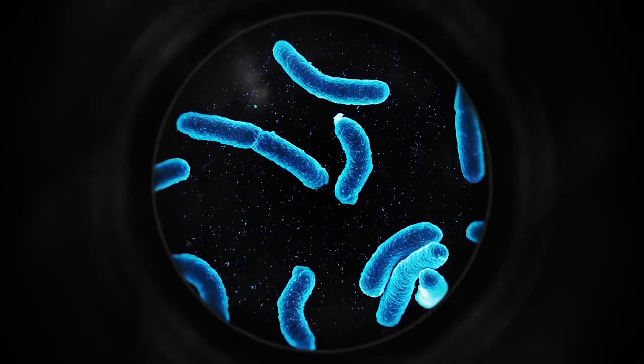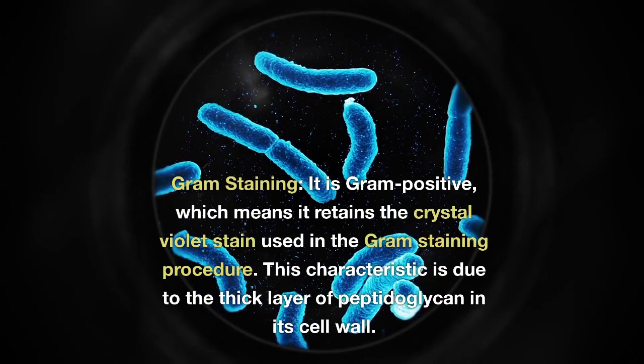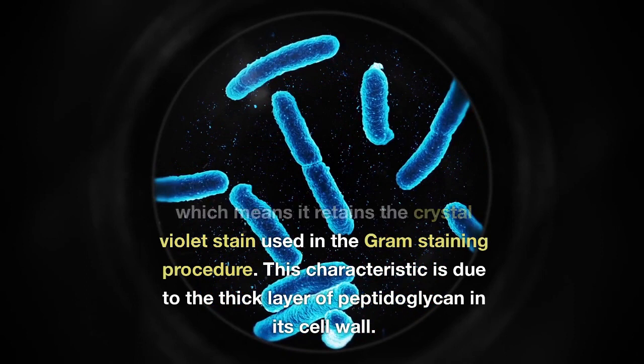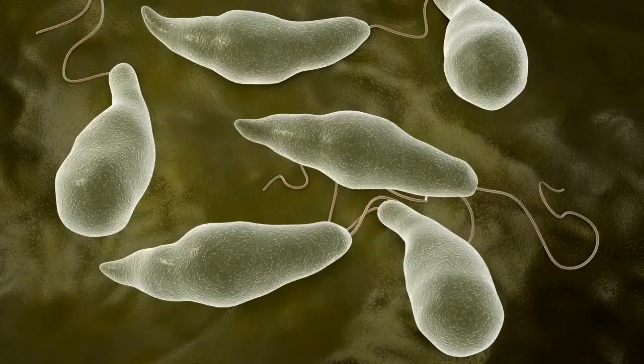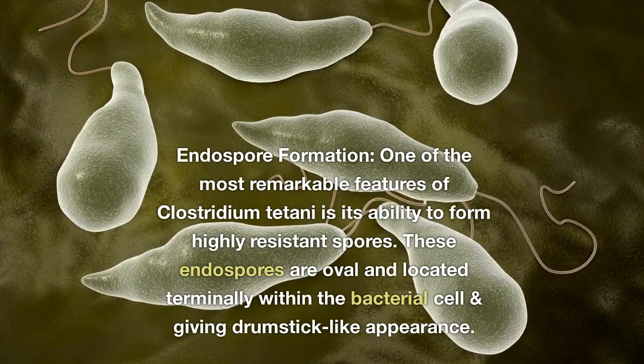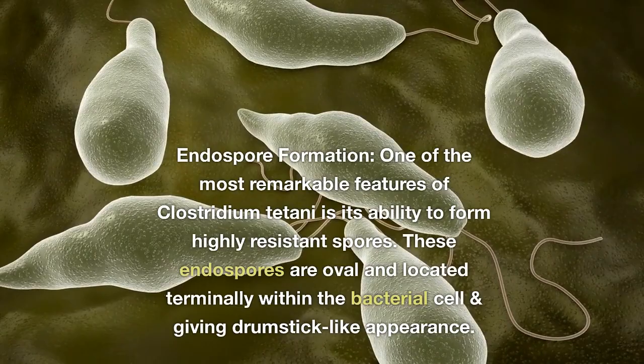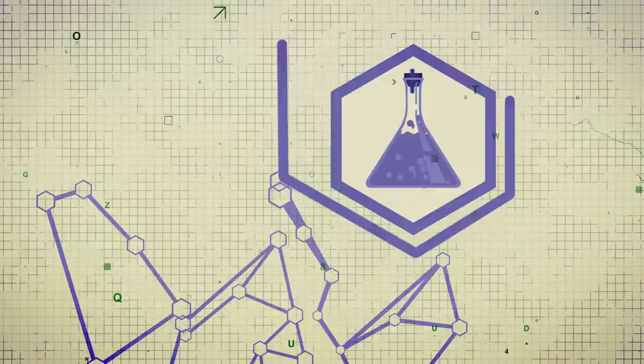Gram staining: Clostridium tetani is gram positive, which means it retains the crystal violet stain used in the gram staining procedure. This characteristic is due to the thick layer of peptidoglycan in its cell wall. Endospore formation: One of the most remarkable features of Clostridium tetani is its ability to form highly resistant spores. These endospores are oval and located terminally within the bacterial cell, giving a drumstick-like appearance. The spore-forming ability allows the bacterium to survive adverse conditions, including exposure to heat and chemicals.